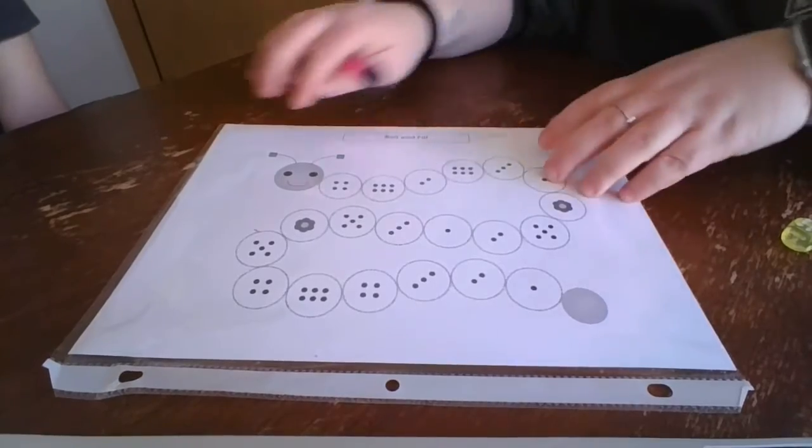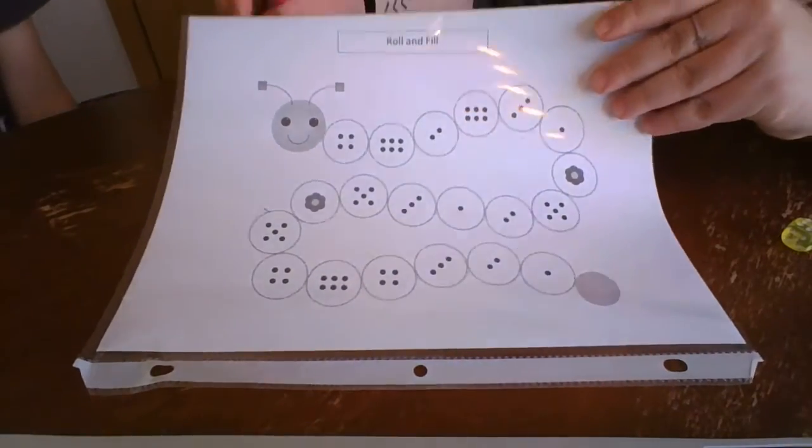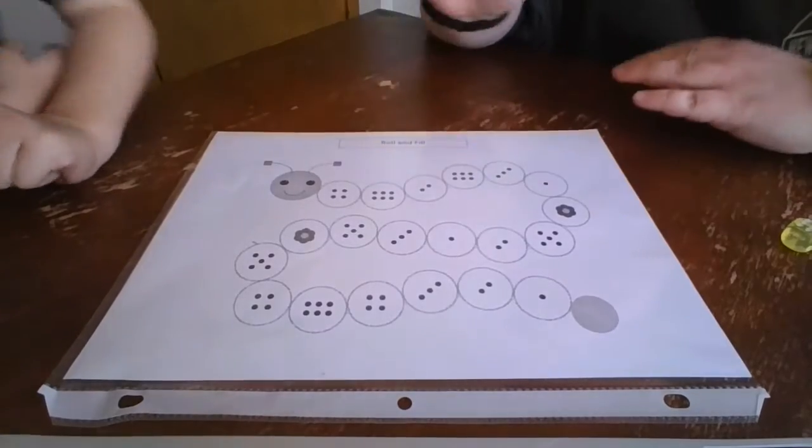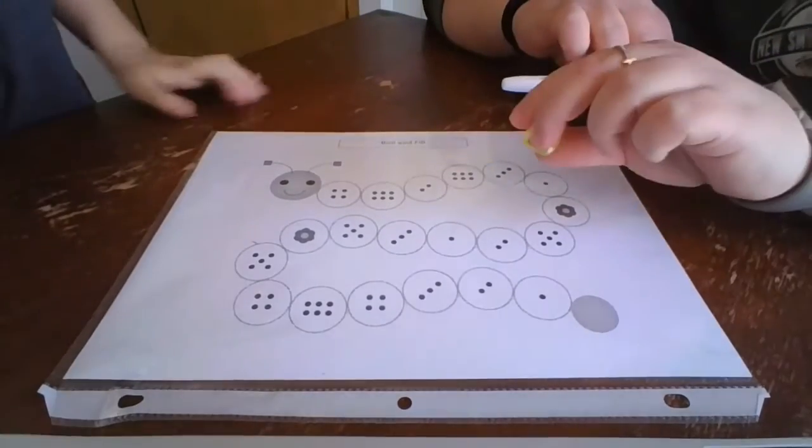This is the Roll and Fill a Caterpillar game. It comes with the paper, a dry erase marker, and then a dice.